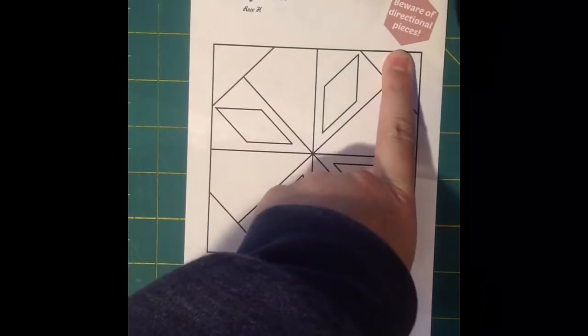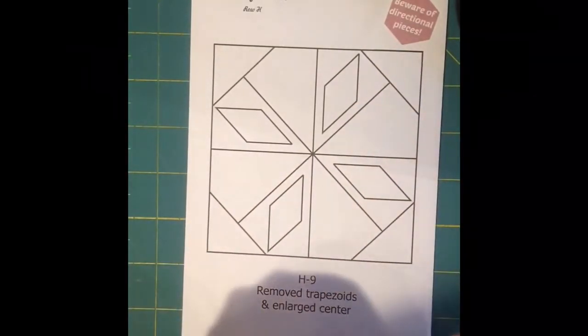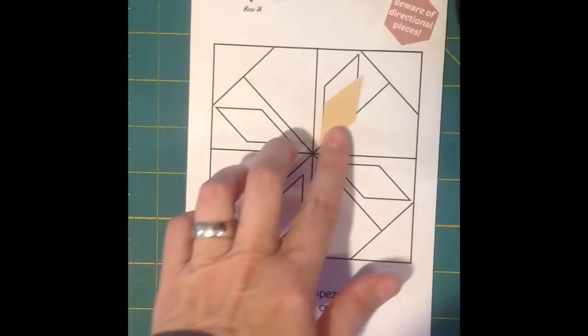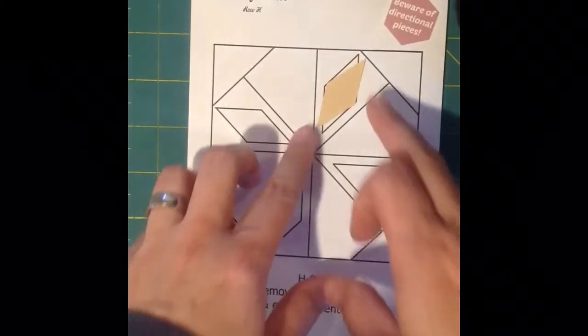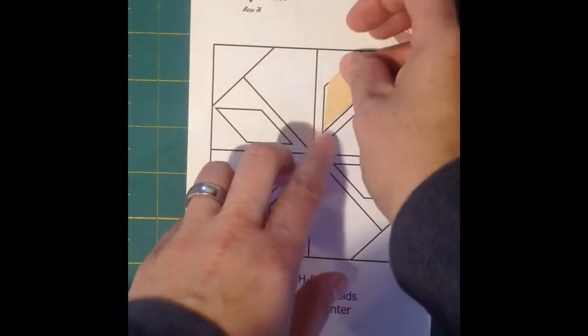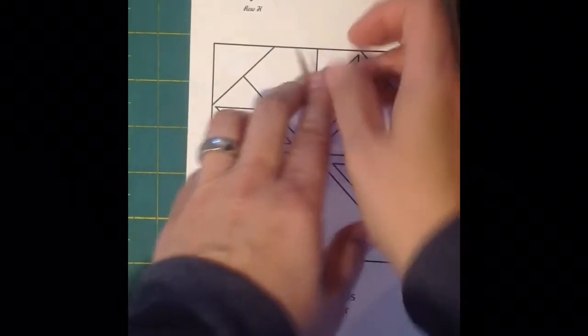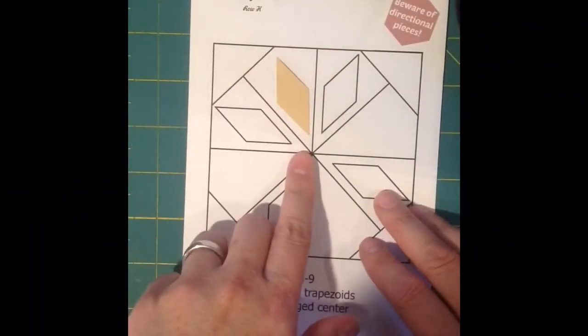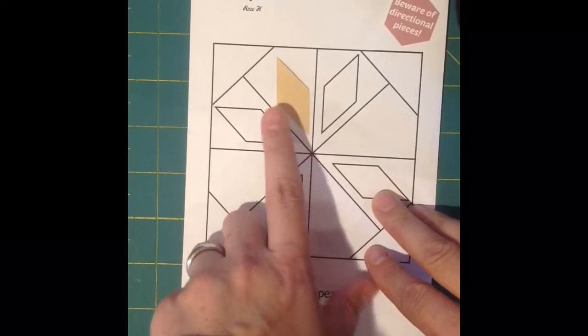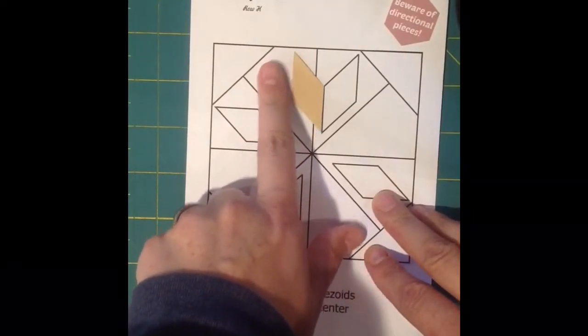So I will go into my row booklet and find my H9. Occasionally you'll see this 'Beware of Directional Pieces,' and I believe that in this case it is referring to the rhombuses, because there can be a right hand, left hand, depending on how you put your fabric, because if I put this here, it's going to look opposite of what it should.